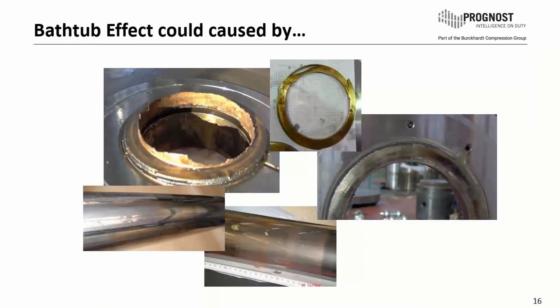These are parts of the packing that caused the bathtub effect. We have polymerization or maybe a malfunction from the packing which heated up the plunger. When we have this hot spot on the plunger, it can be indicated with our proximity sensors which see the typical bathtub effect.